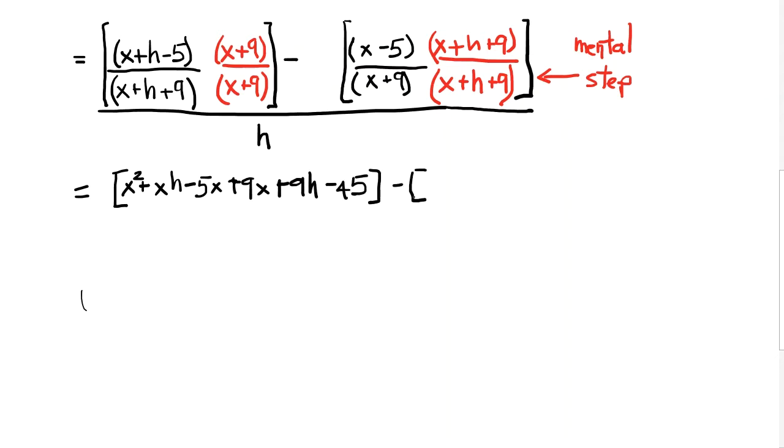And now I've got to multiply x minus 5 times x plus h plus 9. So that's going to give me x squared. Let's see, I'm going to have x squared plus xh plus 9x minus 5x minus 5h and minus 45.